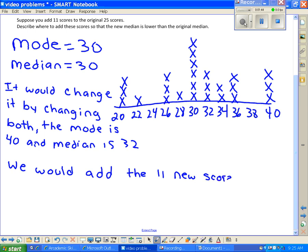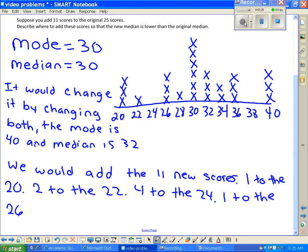We would add the 11 new scores: 1 to the 20, 2 to the 22, 4 to the 24, 1 to the 26, and 1 to 3, 2 to the 28.